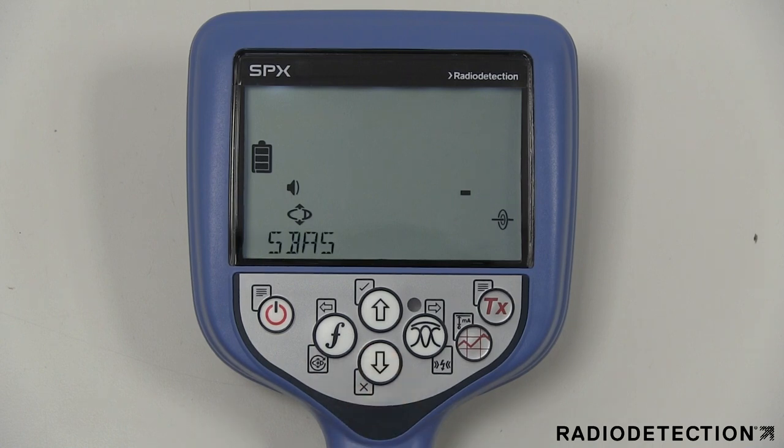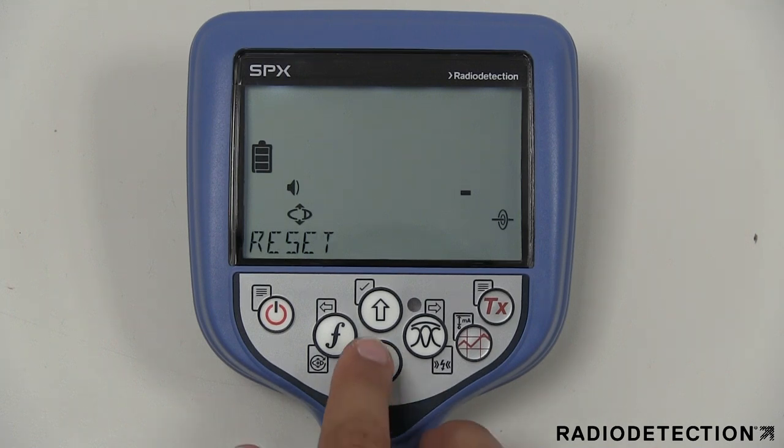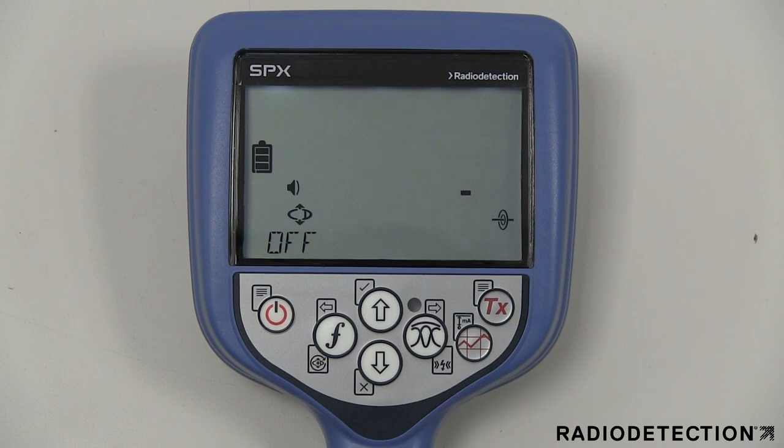The SBAS augmentation option improves the internal GPS accuracy. You can also select to use an external GPS source.